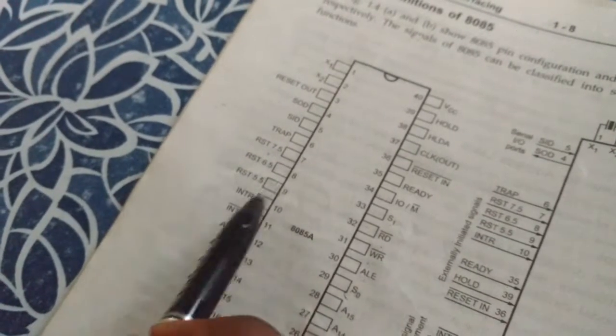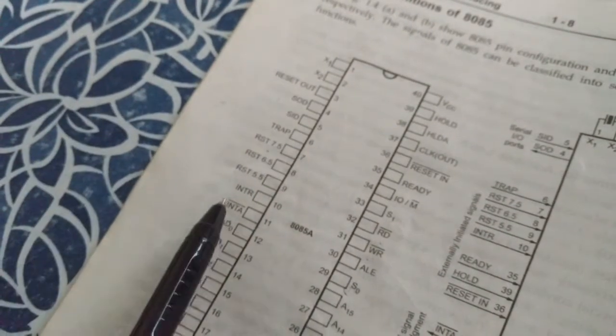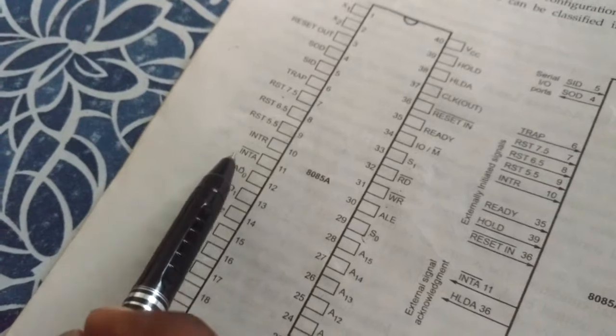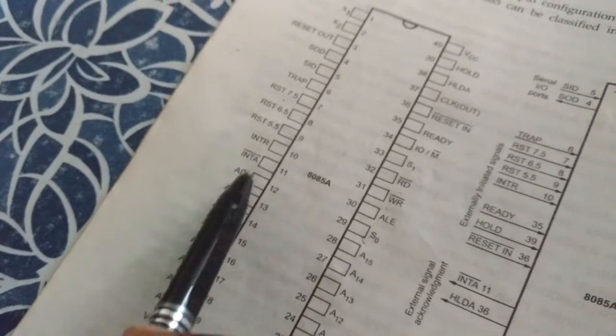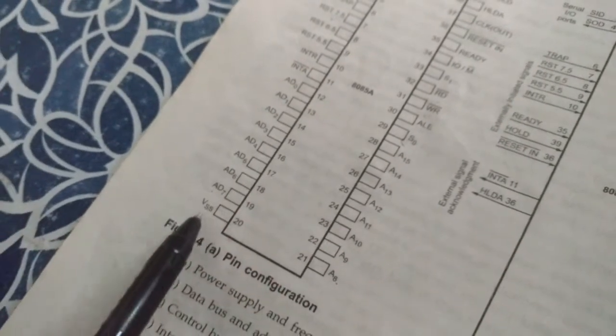After paying 5.5 lakhs, those children were released. So in the neighborhood there are two persons, female INTR and male INTA. They both have children from AD0 to AD7. These children are superfast. VSS. So that's the end of the first set. You can easily know these 20 pins.